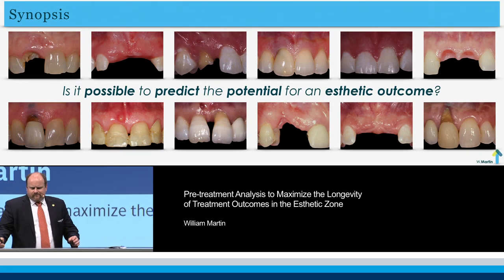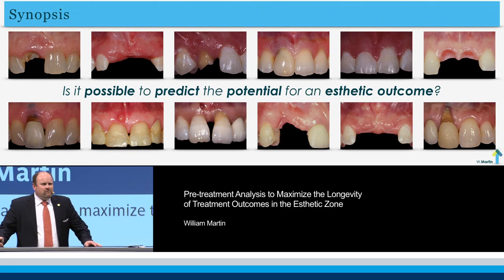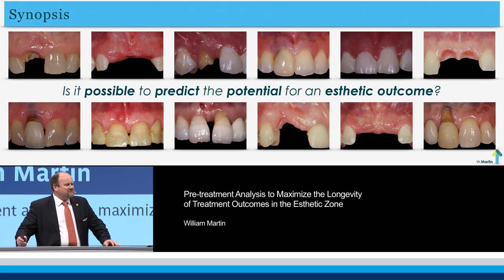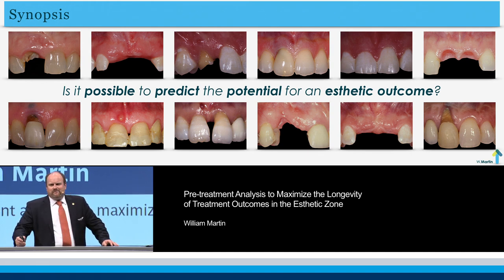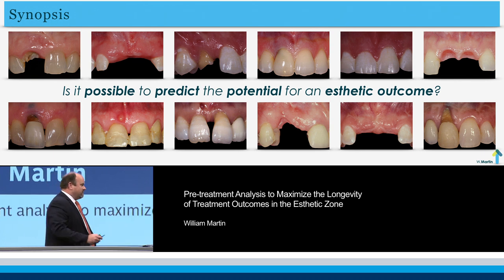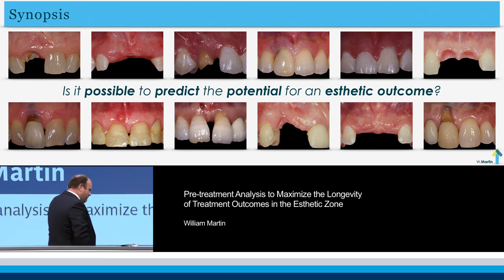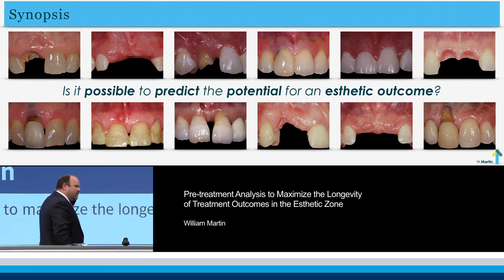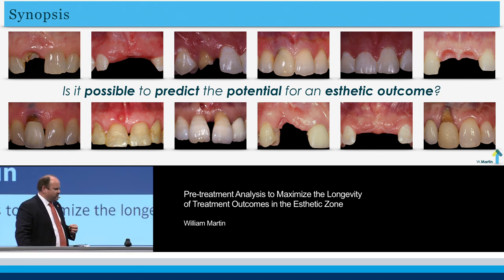You see potential patients on the screen — patients of yours that you may be currently treating. Quite often these patients are coming to us with the desire for us to replace what's missing, or what they're about to lose, in a manner that is acceptable to them from an aesthetic standpoint. So is there a way that we can predict the potential for an aesthetic result?